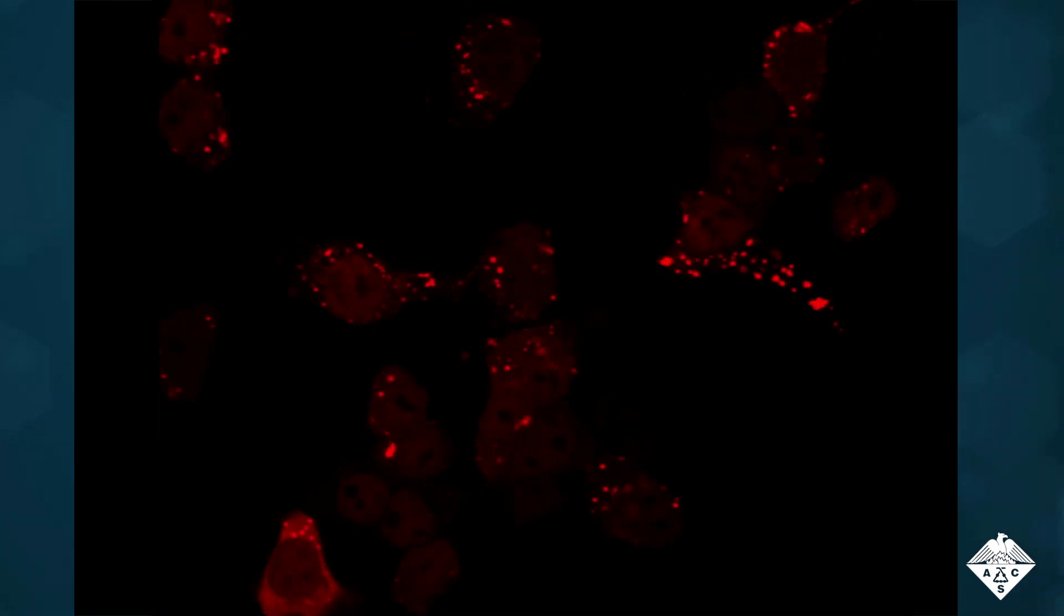And by tweaking the system and using a different dye, the researchers could detect when a small molecule disrupted the interaction between two proteins. Here, they observed the disappearance of intense red fluorescent spots.